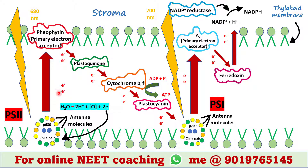PS2 first absorbs sunlight of 680 nanometer wavelength, gets excited, and loses two electrons which are accepted by the primary electron acceptor pheophytin. Pheophytin releases them and plastoquinone accepts them. Plastoquinone releases them and cytochrome b6f accepts them.